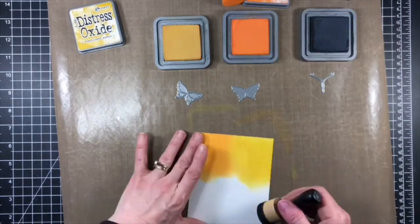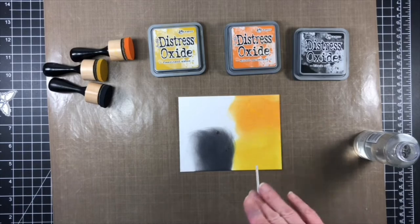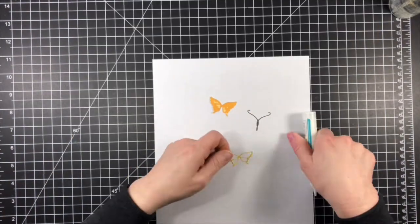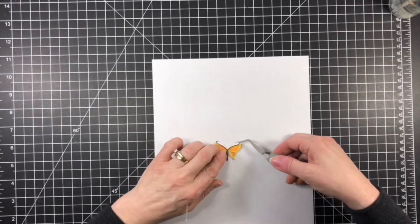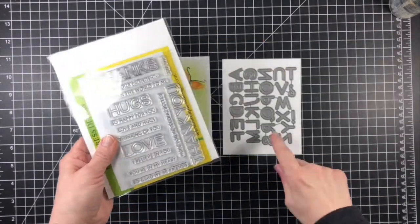For the butterfly I used layers A and C of the Genevieve Butterfly Layer Dye Set. After I cut the butterfly I glued it together using some liquid glue just where the body meets in the middle so that I could bend the wings up for some added dimension on my card.